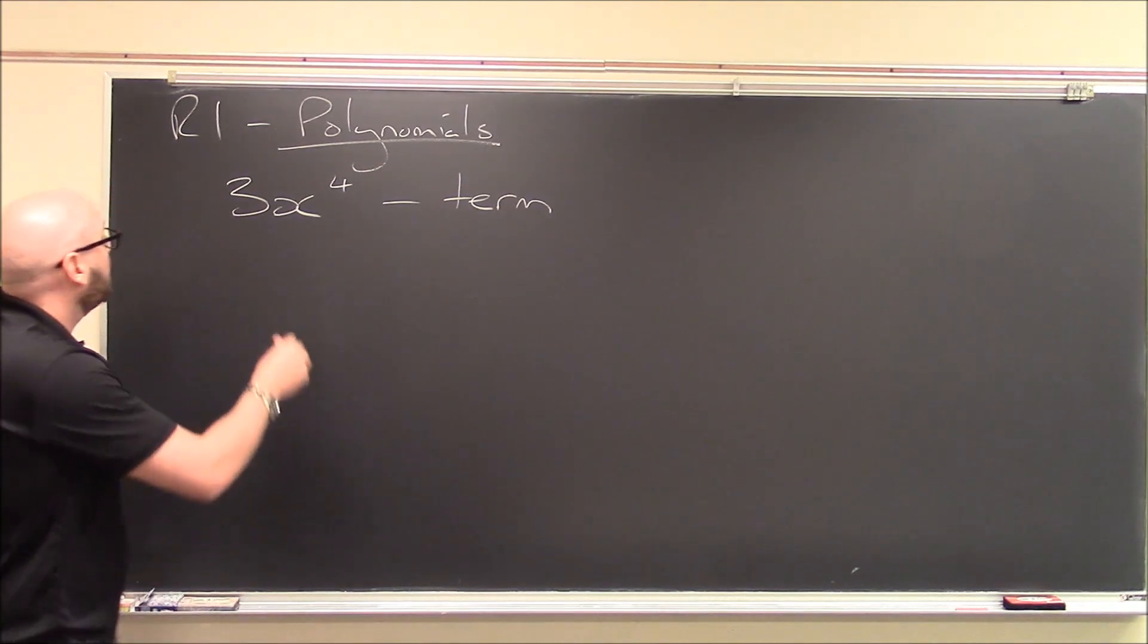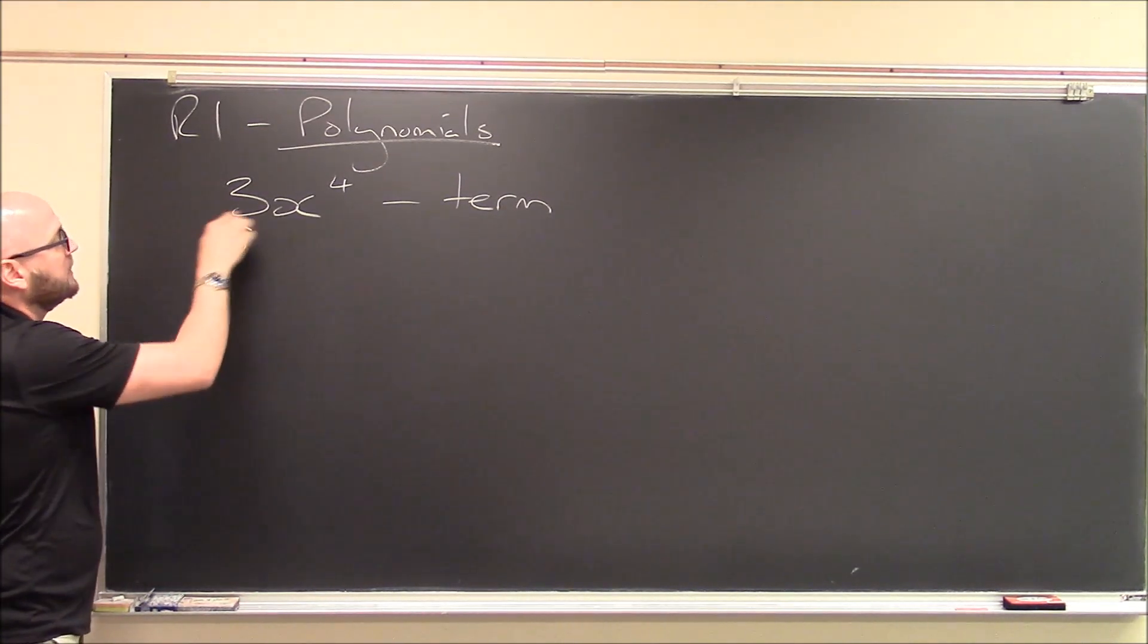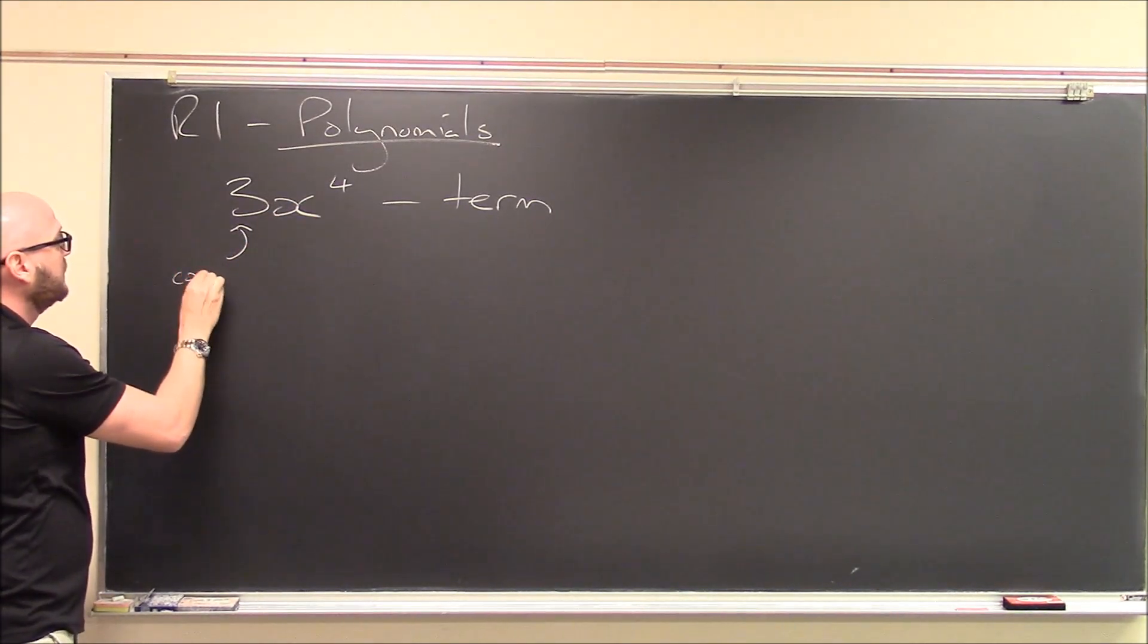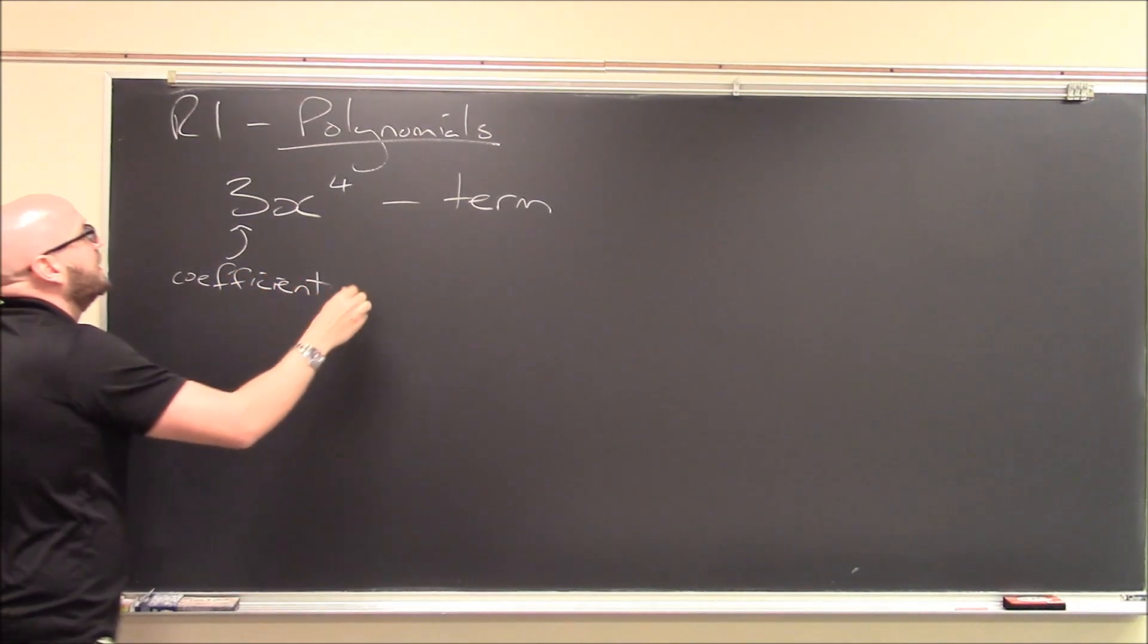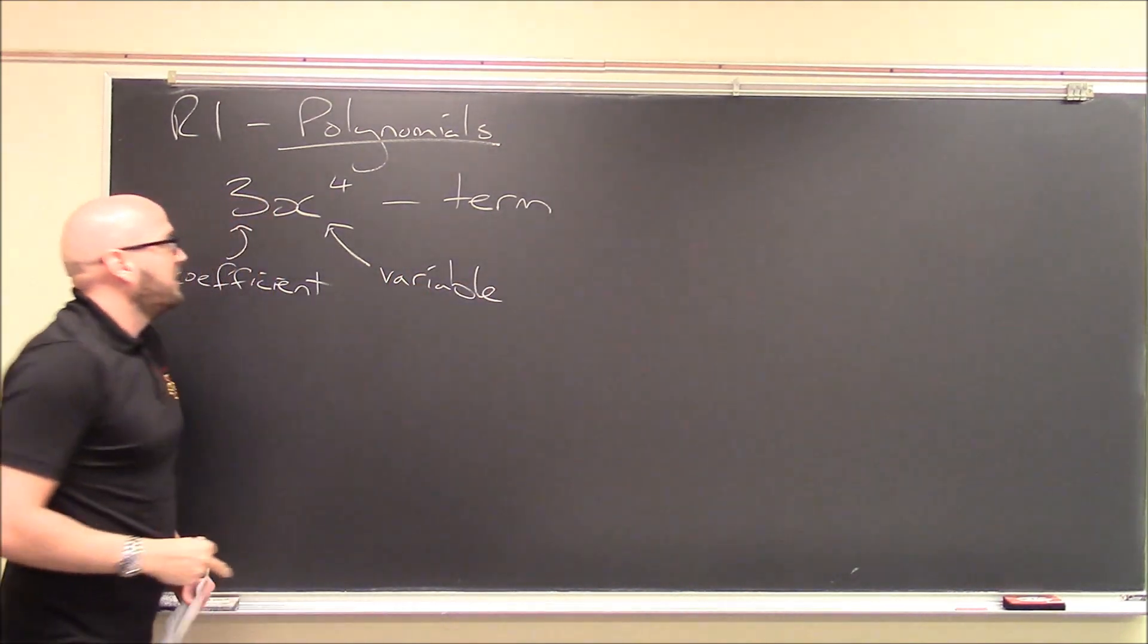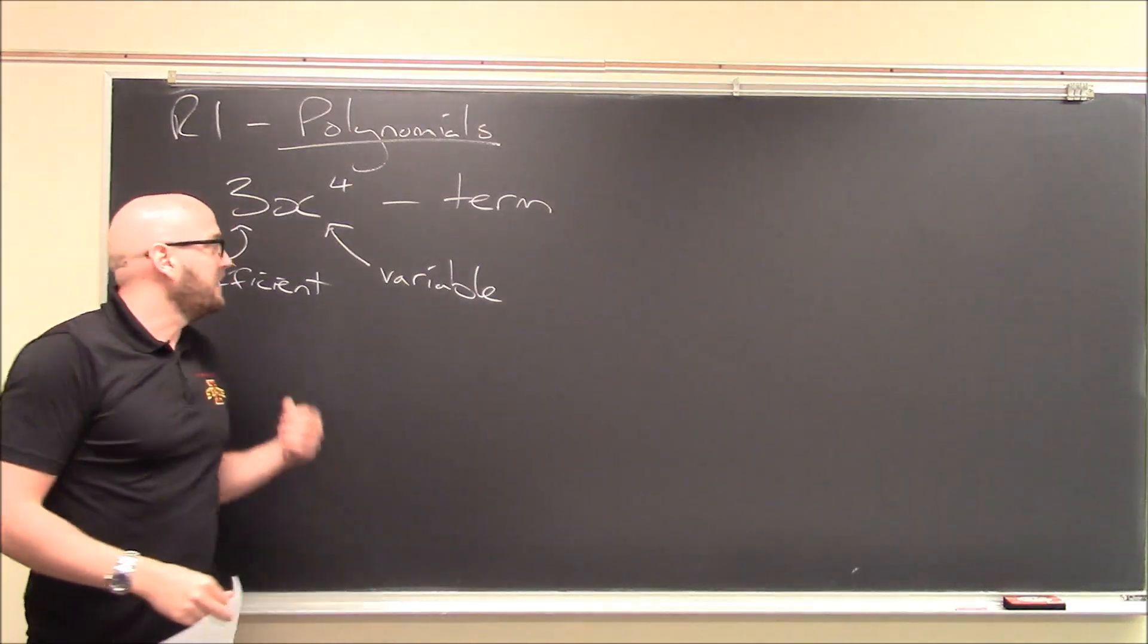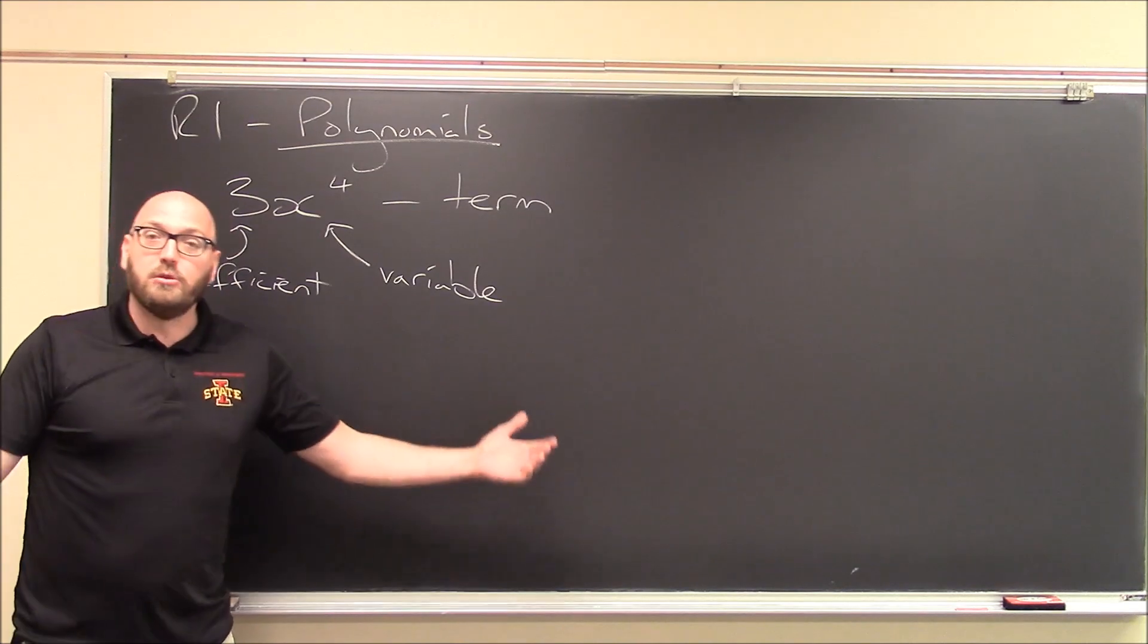And why is it a term? Well, it consists of three different pieces. It's got this 3 in front. It's 3 times x to the 4th. The 3 is called the coefficient. So x is the variable. So x is, we think of this as being a variable. It's allowed to be any number that you want: 1, 2, 3, 5, 18, square root of 2, pi.